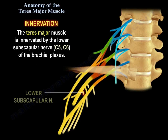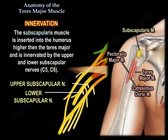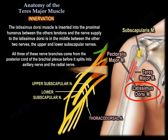Innervation: the teres major muscle is innervated by the lower subscapular nerve, C5 and C6 of the brachial plexus. The subscapularis muscle is inserted into the humerus higher than the teres major and is innervated by both the upper and the lower subscapular nerves, C5 and C6.